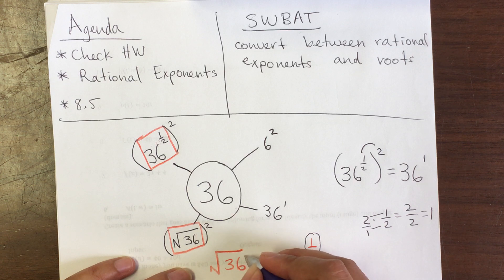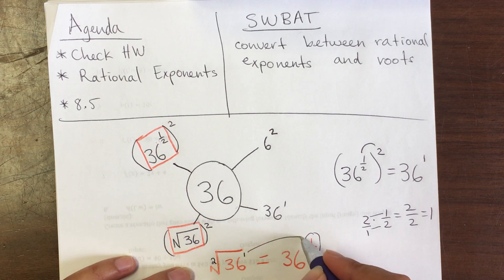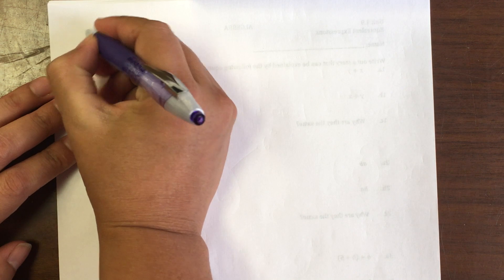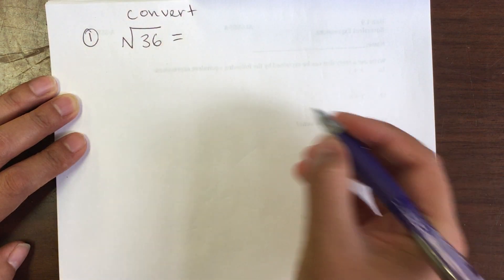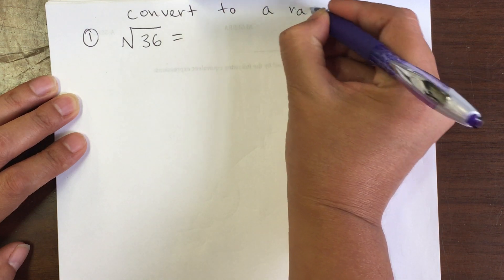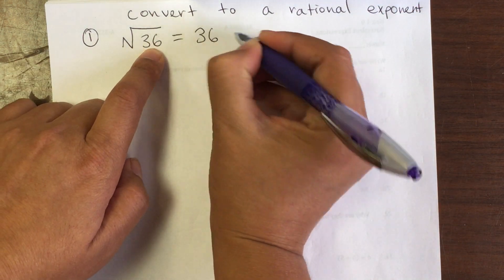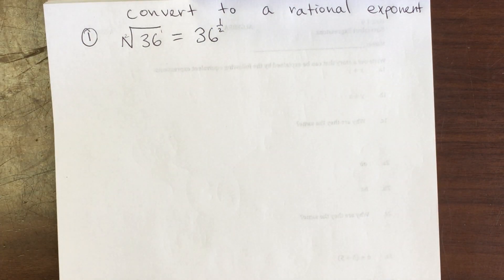Where does that come from? If there is no exponent, that means there is a 1. From the previous lesson, when there is no index there is a 2. The exponent goes to the numerator and the index goes to the denominator. So to convert the square root of 36 to a rational exponent, we keep the same base — 36 — and the exponent becomes 1 over 2, giving us 36 to the one half power.